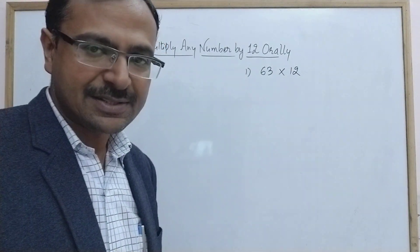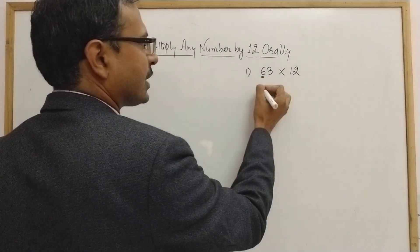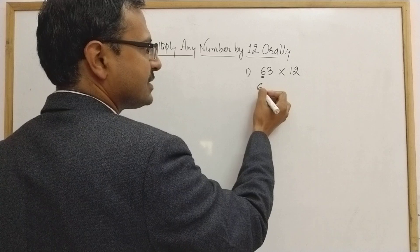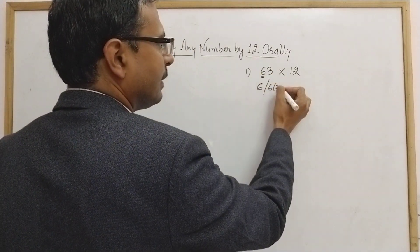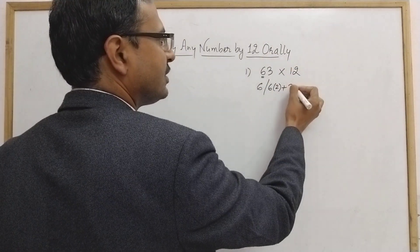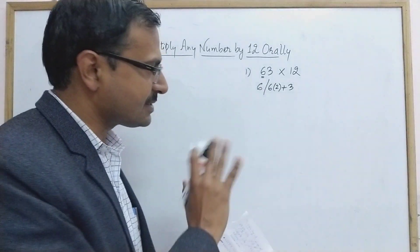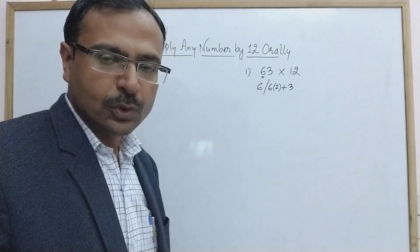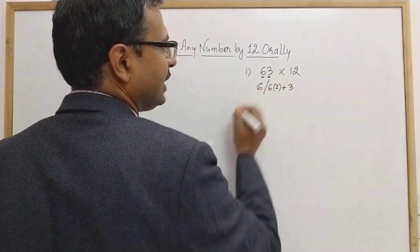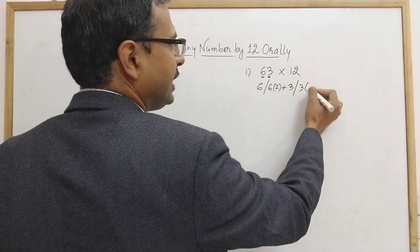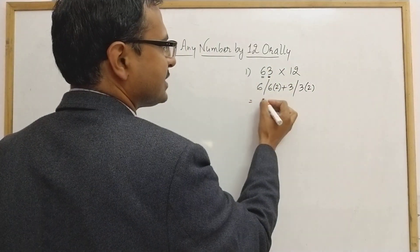We start from the first digit. Write the first digit — 6 — followed by a slash, then double of 6 plus the next digit 3. This is the important step you need to learn, and we'll follow this same step for two-digit all the way up to seven-digit numbers. After that, we have 3, so double of 3, and nothing on the right side, so we leave it there.